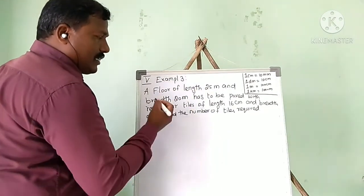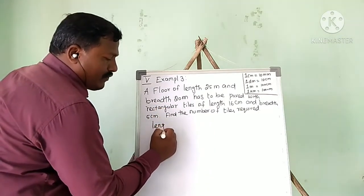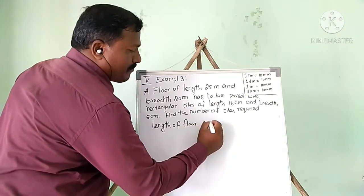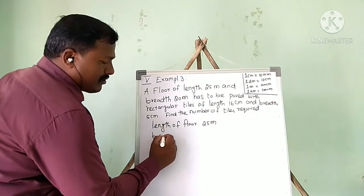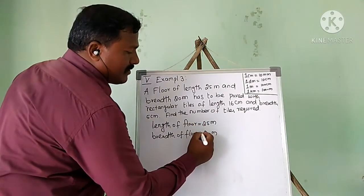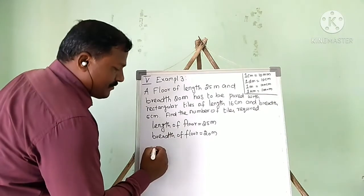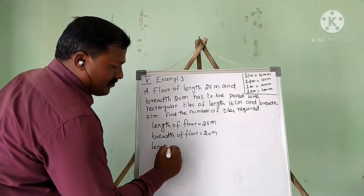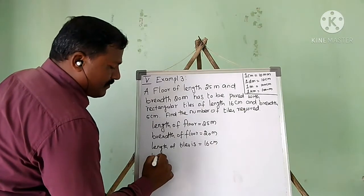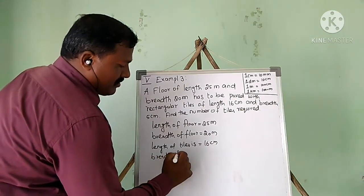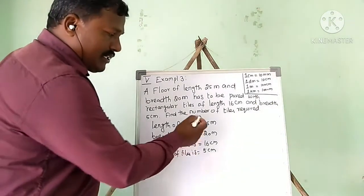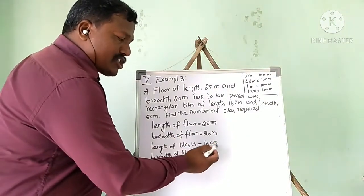First, let me write down all the given values. The length of the floor is 25 meters, and the breadth of the floor is 20 meters. The length of the tiles is 16 centimeters, and the breadth of the tiles is 5 centimeters.